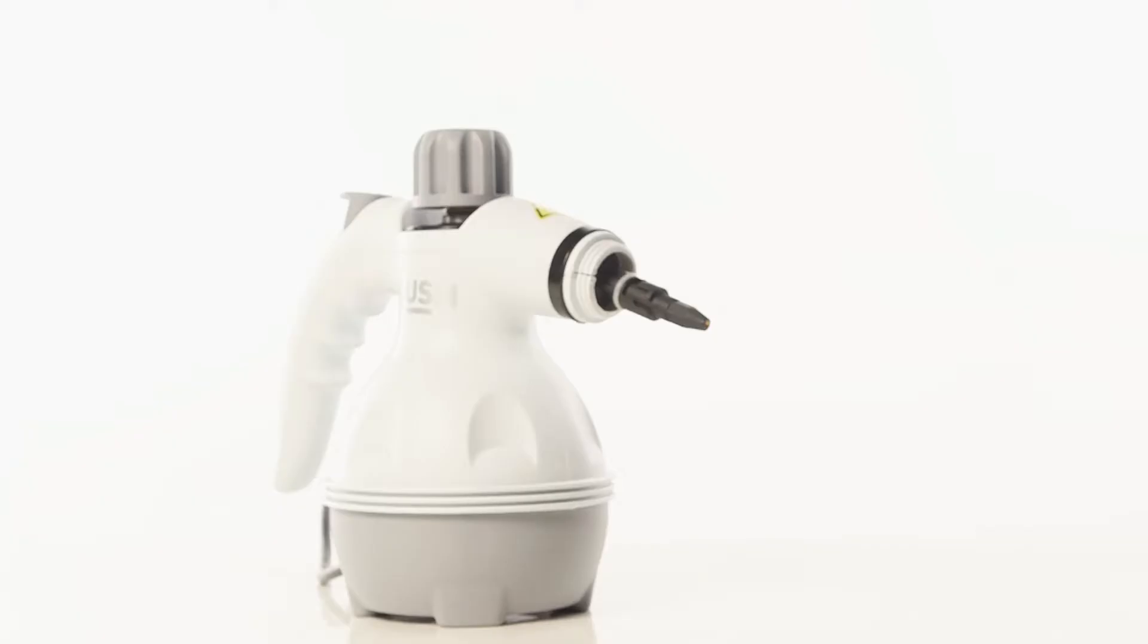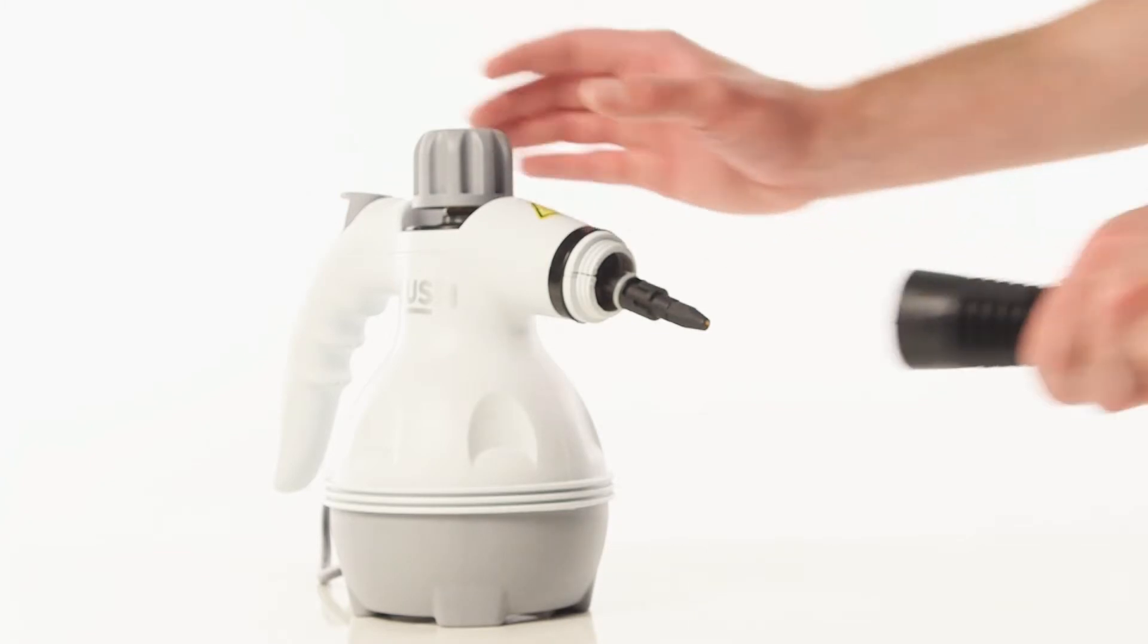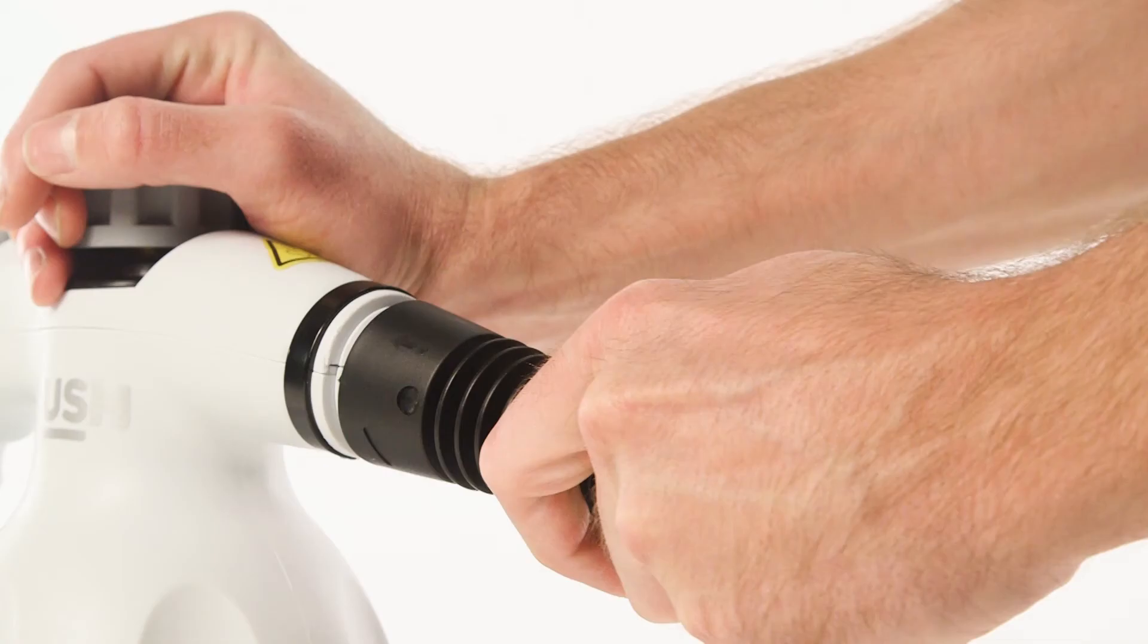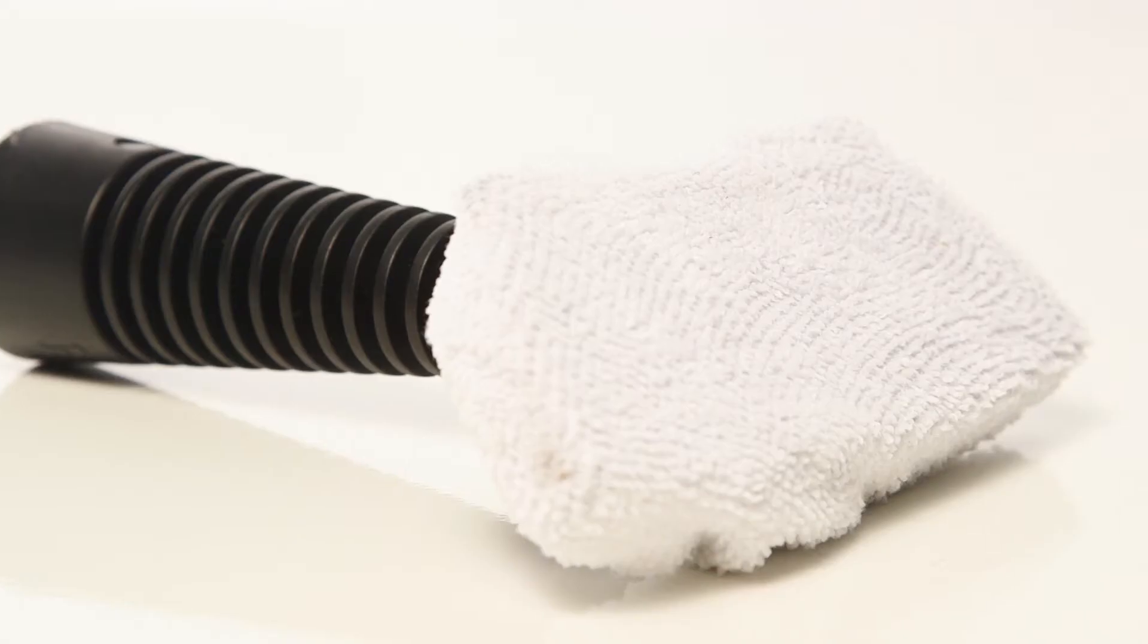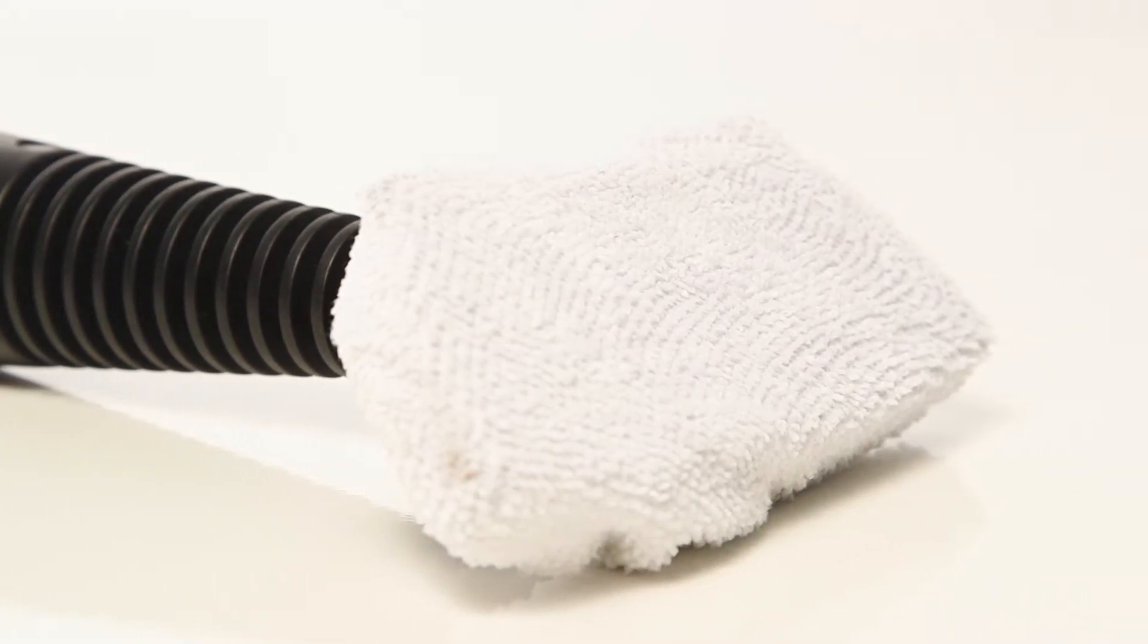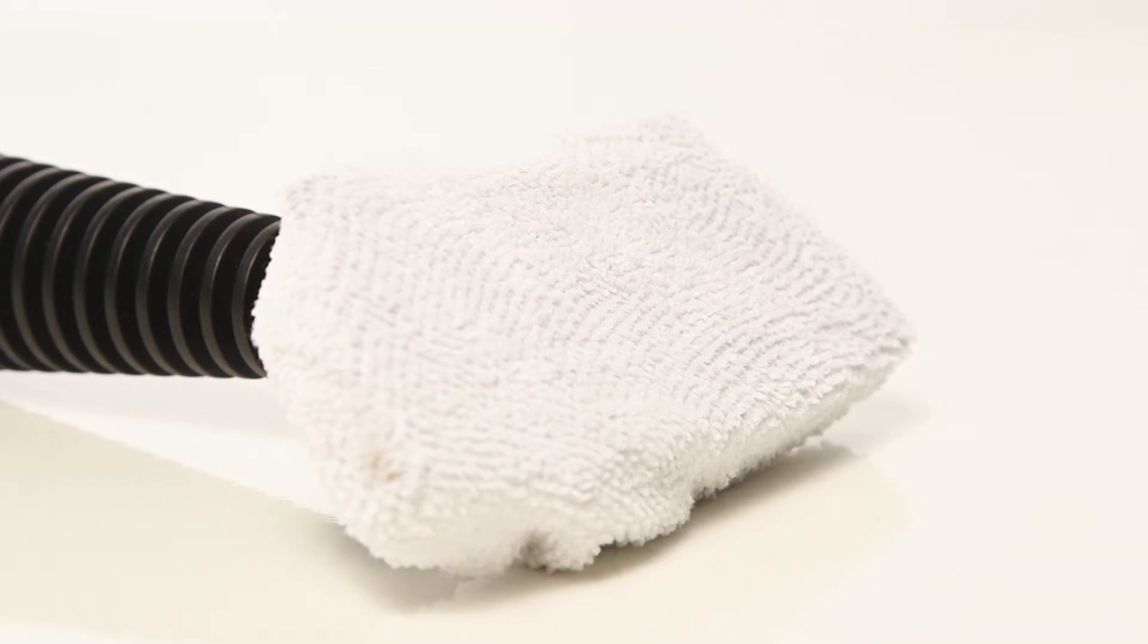To attach one of the accessories, press the accessory up to the rubber seal. Then, turn the accessory clockwise to lock it in place. Additionally included is an upholstery tool which can be used on curtains and clothing.